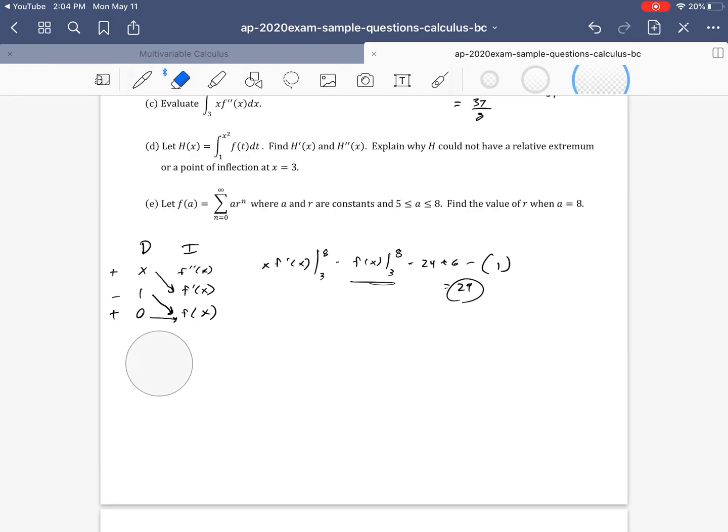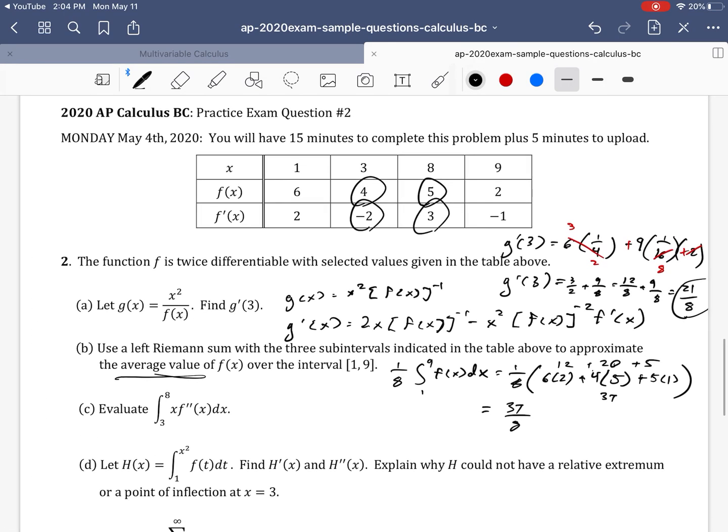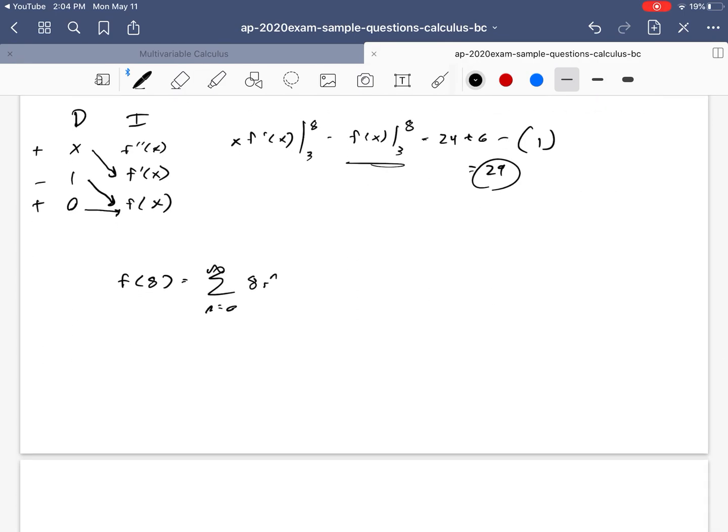On to part e. Oh, that was from the last one. Okay. I'm going to just erase this part right here. Okay. Part e, we have this sum here. Okay. Find the value of r when a equals 8. So that means that f of 8 is equal to sigma n equals 0 to infinity of 8 r to the n. And so notice that's a constant in the summation, so we can take that out front. And notice I'm going to plug in what f of 8 is. f of 8 is 5. And then so what I get is I'm going to divide by this 8 here since it's a constant. So we get 5 eighths then is equal to sigma n equals 0 to infinity of r to the n.